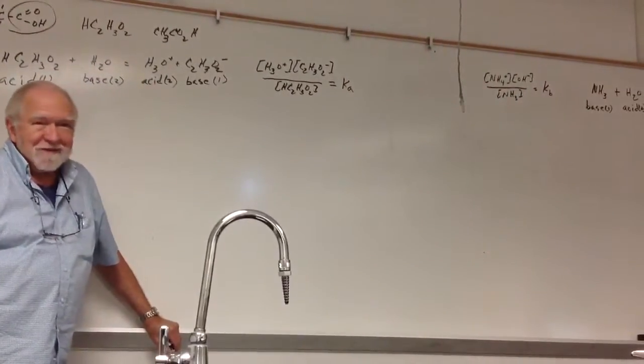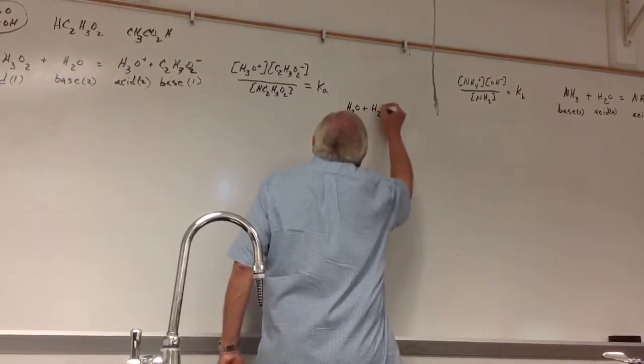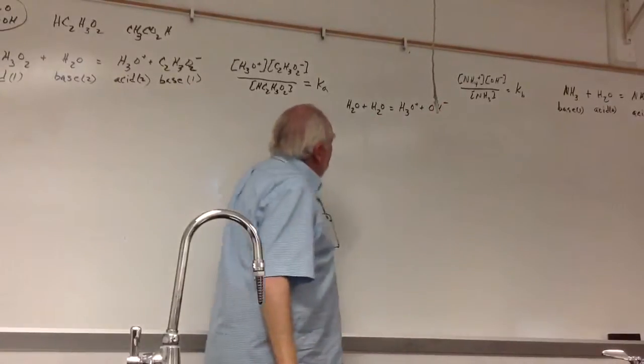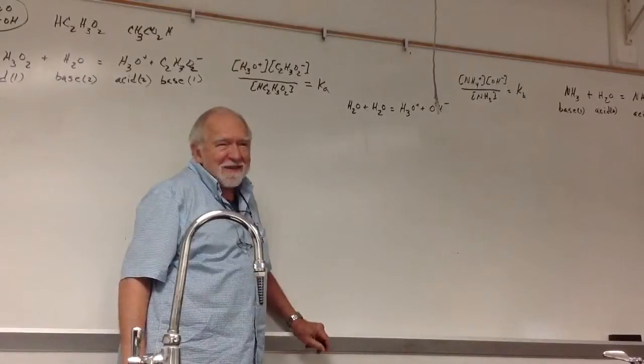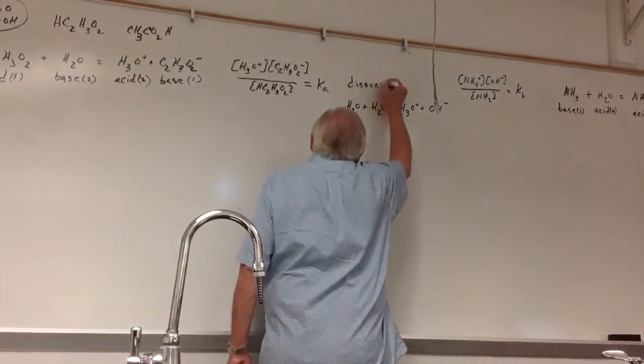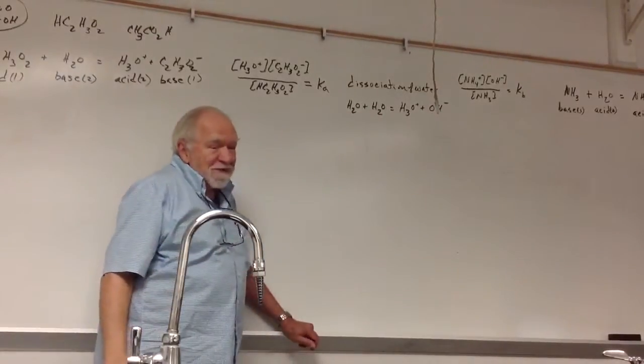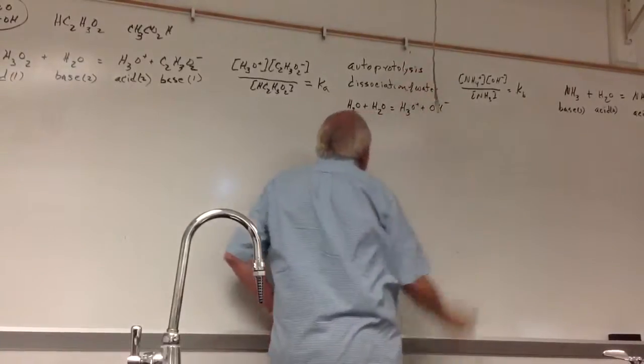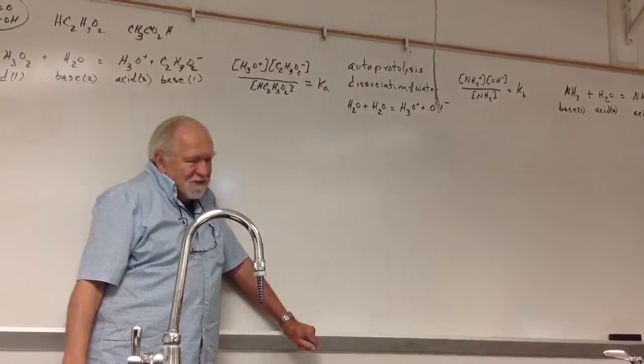So what happens if I put water together? It behaved as an acid and a base. Which one's the acid? Which one's the base? You don't know. But this is called dissociation of water. It's also called autoprotolysis of water. It means one of them picked up the hydrogen and the other must have lost it. Self-dissociation is another one that they use. There are all sorts of terms to refer to that.